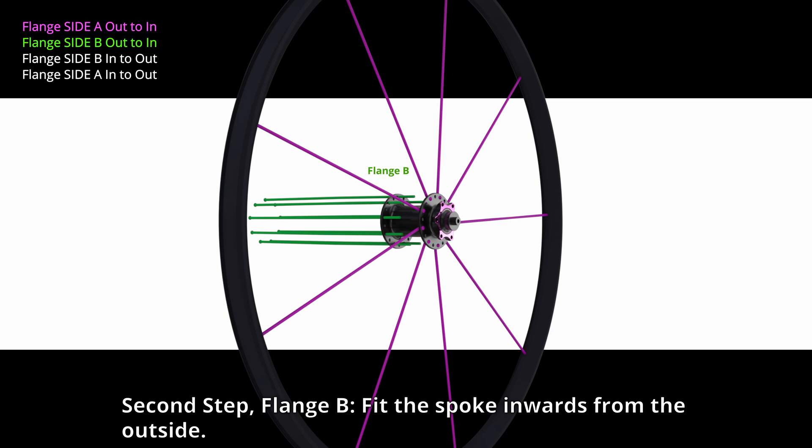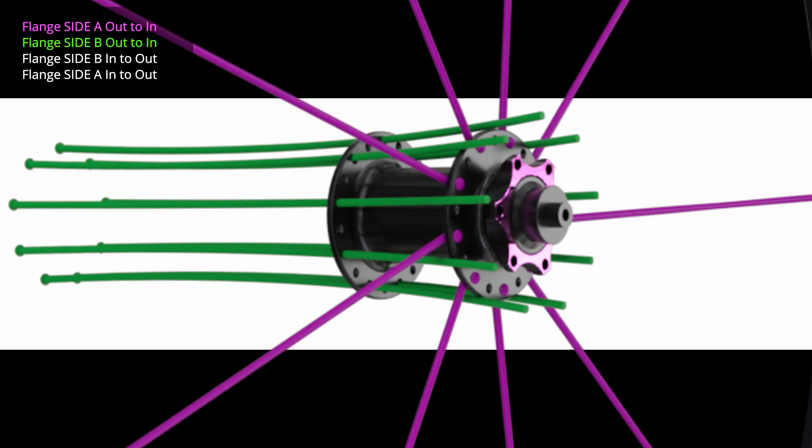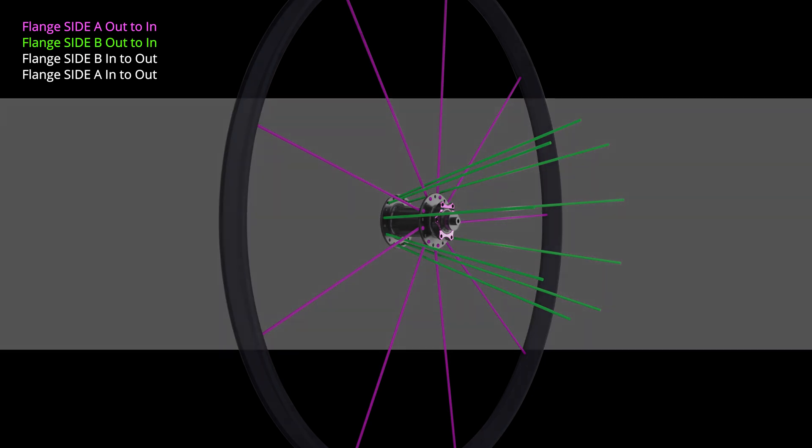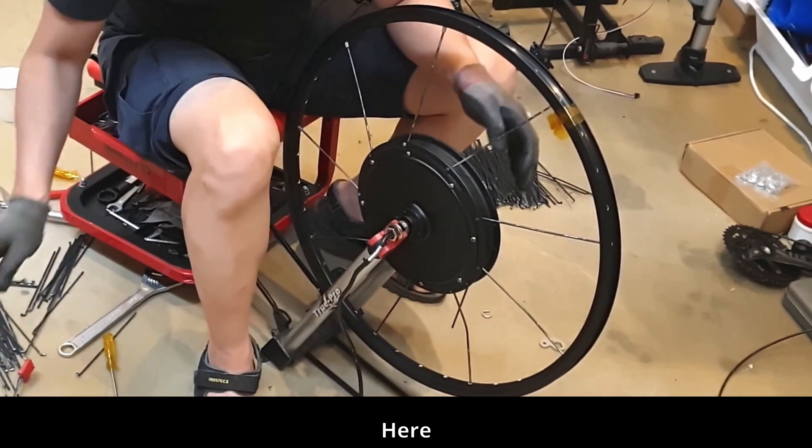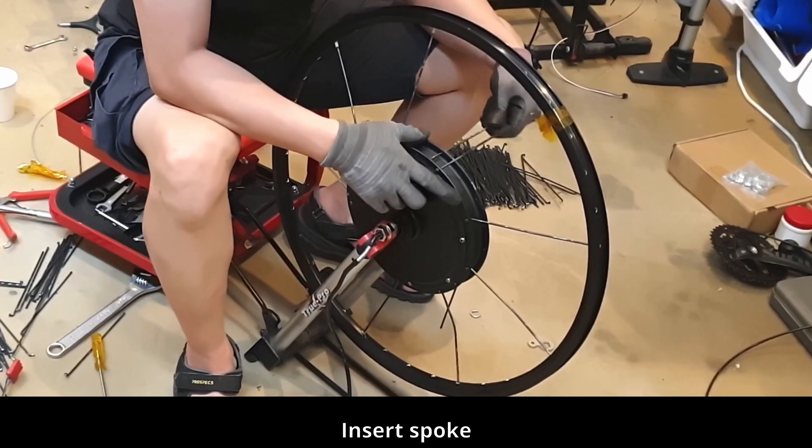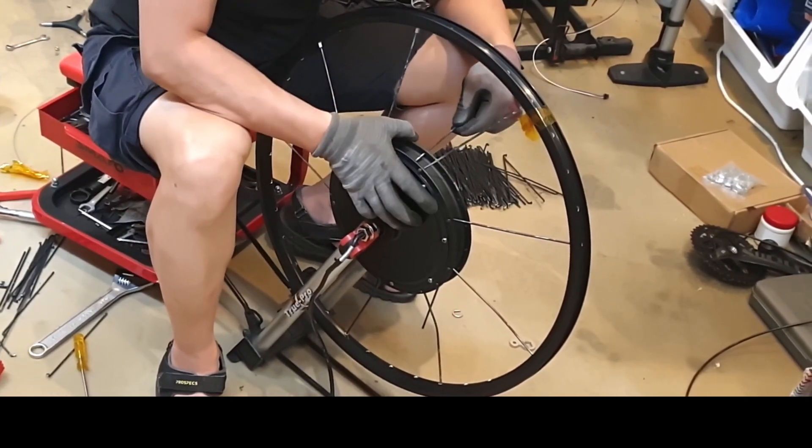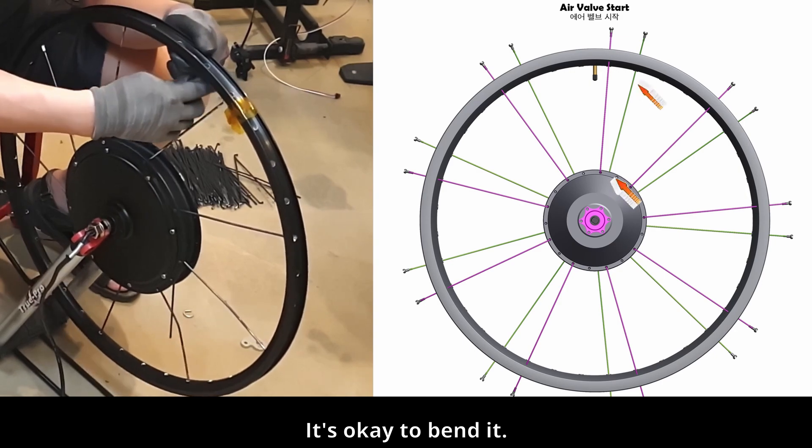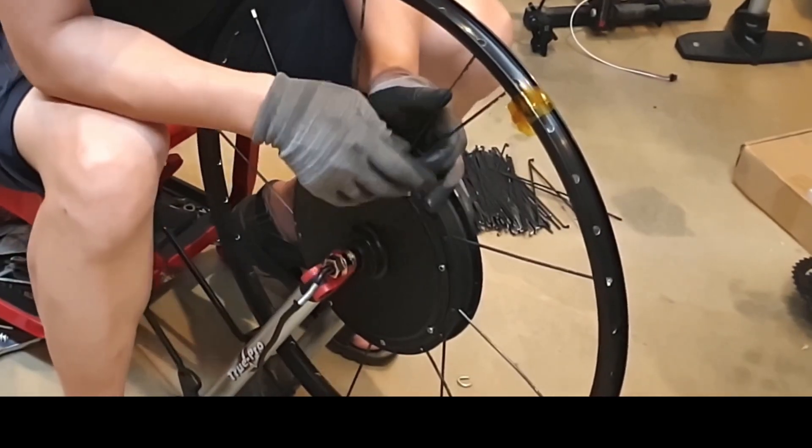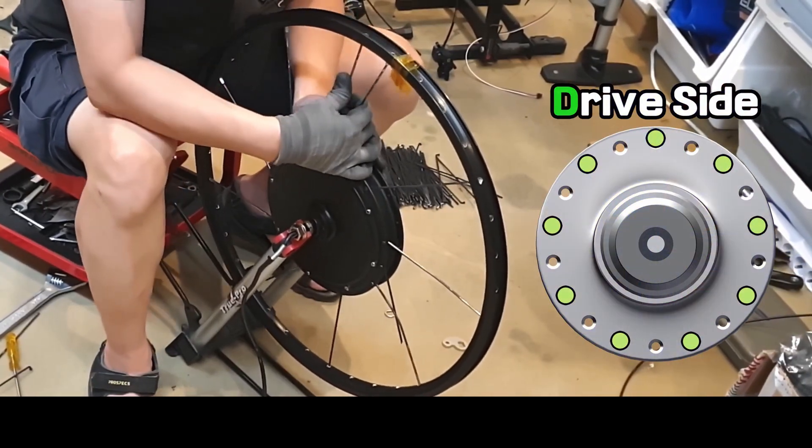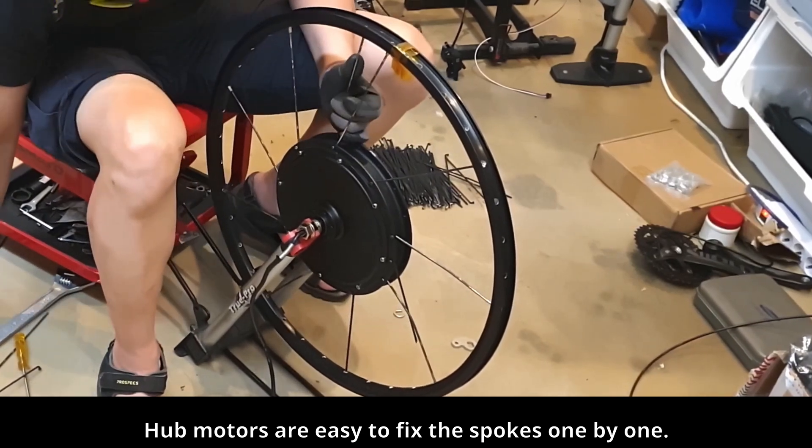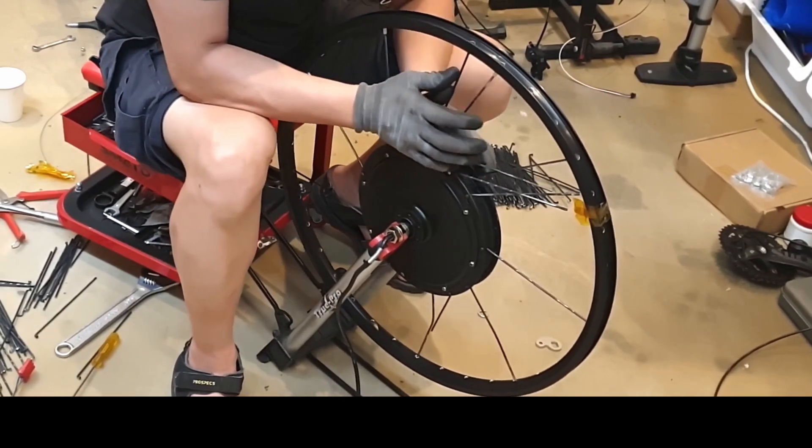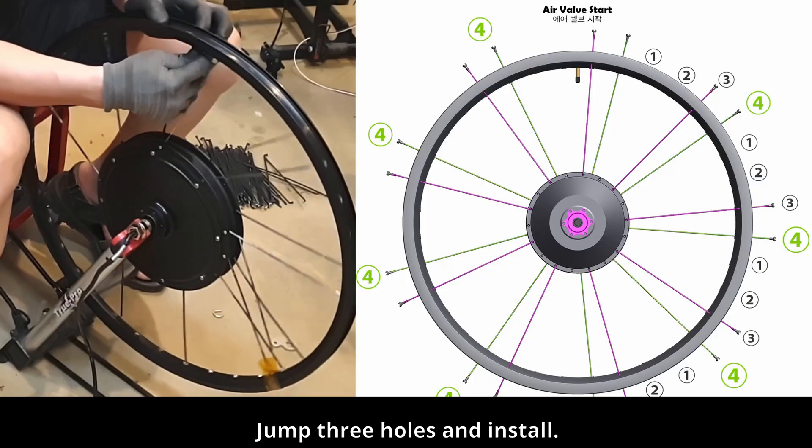Second step: flange B, fit the spoke inwards from the outside. Now install on the opposite side. Insert it next to the spoke you first installed. Jump three holes and install. 29-inch hub motors are easy to fix the spokes one by one.